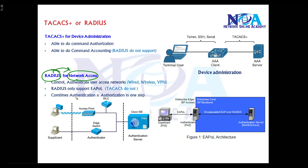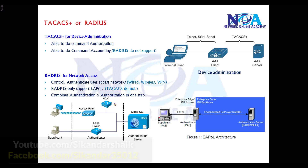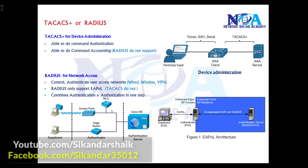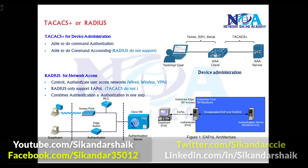For network access, we use RADIUS because authentication and authorization can be done in one single step. RADIUS supports EAP over LAN, which allows users to authenticate before accessing LAN resources — something TACACS+ does not support. Generally, for controlling users accessing wired, wireless, or VPN resources, we use the RADIUS protocol.